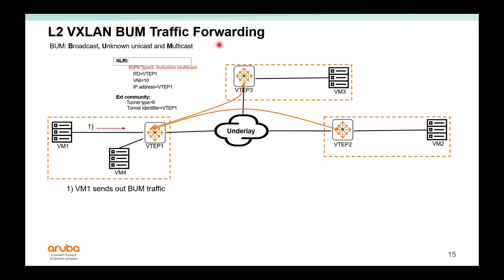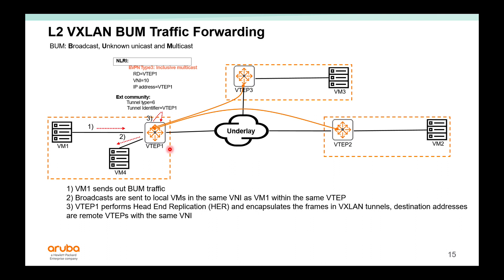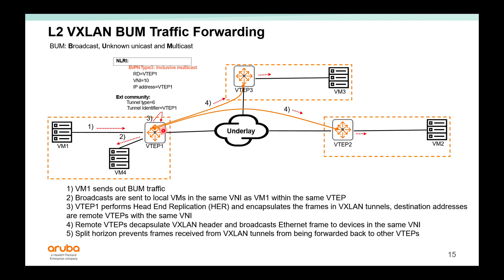For BUM traffic — broadcast, unknown unicast, and multicast — in a VXLAN and EVPN network, EVPN Type 3 inclusive multicast information is used. When VM1 sends BUM traffic, VTEP1 receives it, floods it on ports with the same VNI locally, then performs head-end replication — converting it to unicast and forwarding it to all other VTEPs interested in the same VNI. Split horizon is used by VXLAN to prevent BUM traffic received from a tunnel from being sent back out into tunnels to other VTEPs.